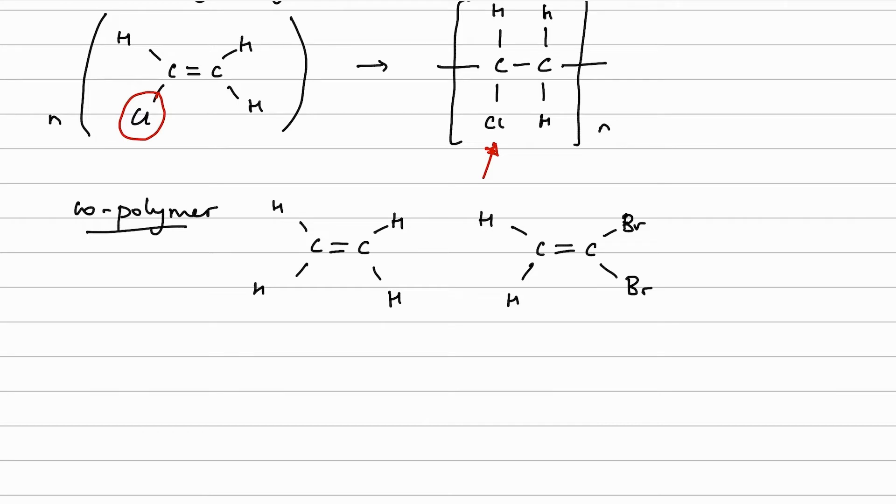If I were to draw out a section of the repeat unit, it would look like so. This repeat unit has four carbons in it. And then the hanging bonds.